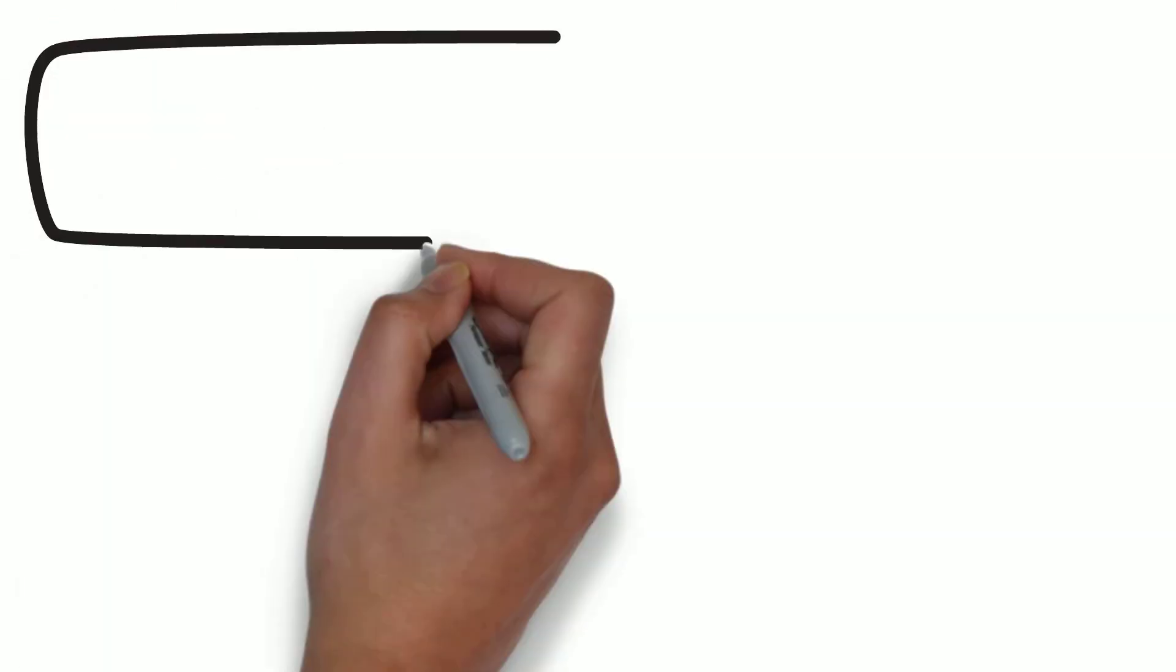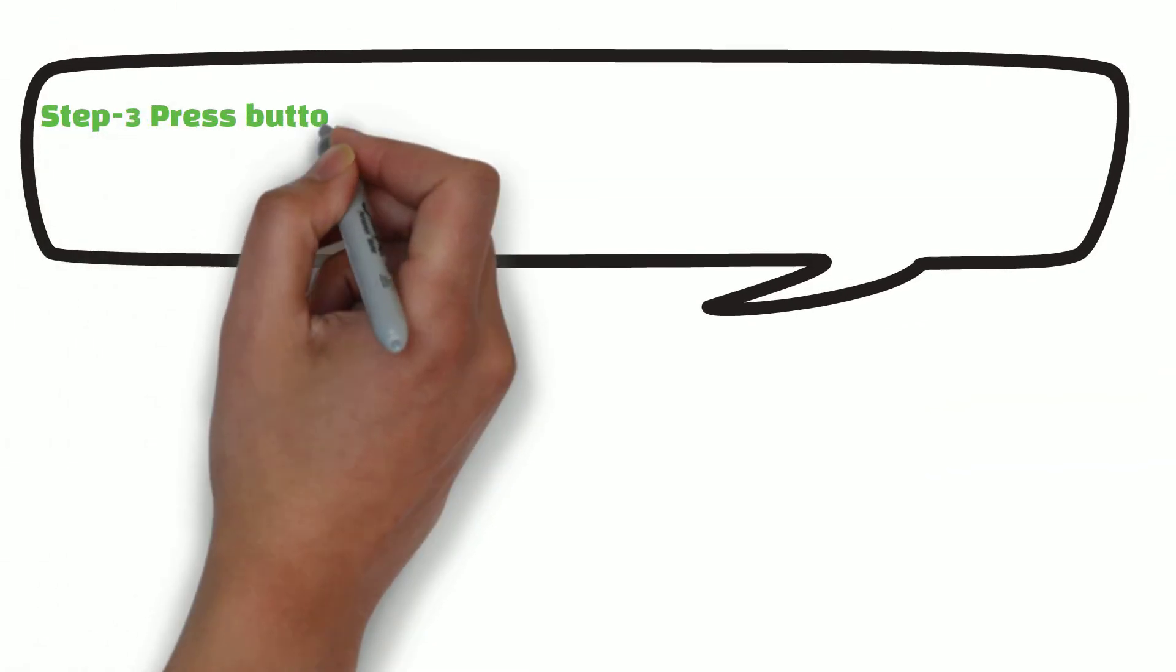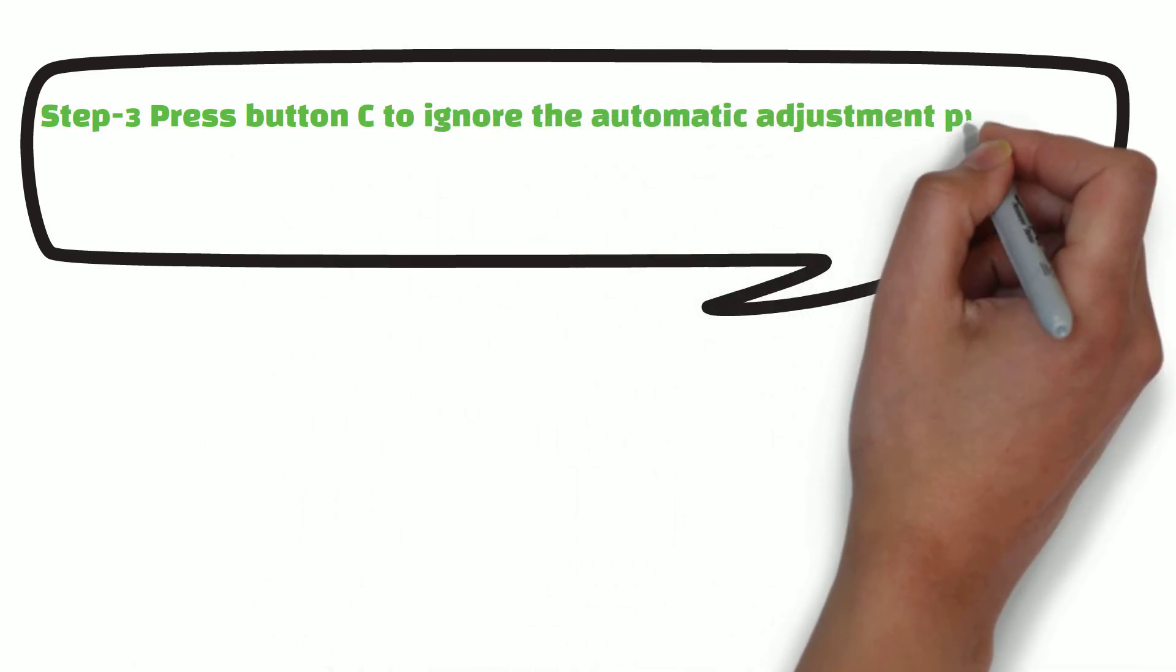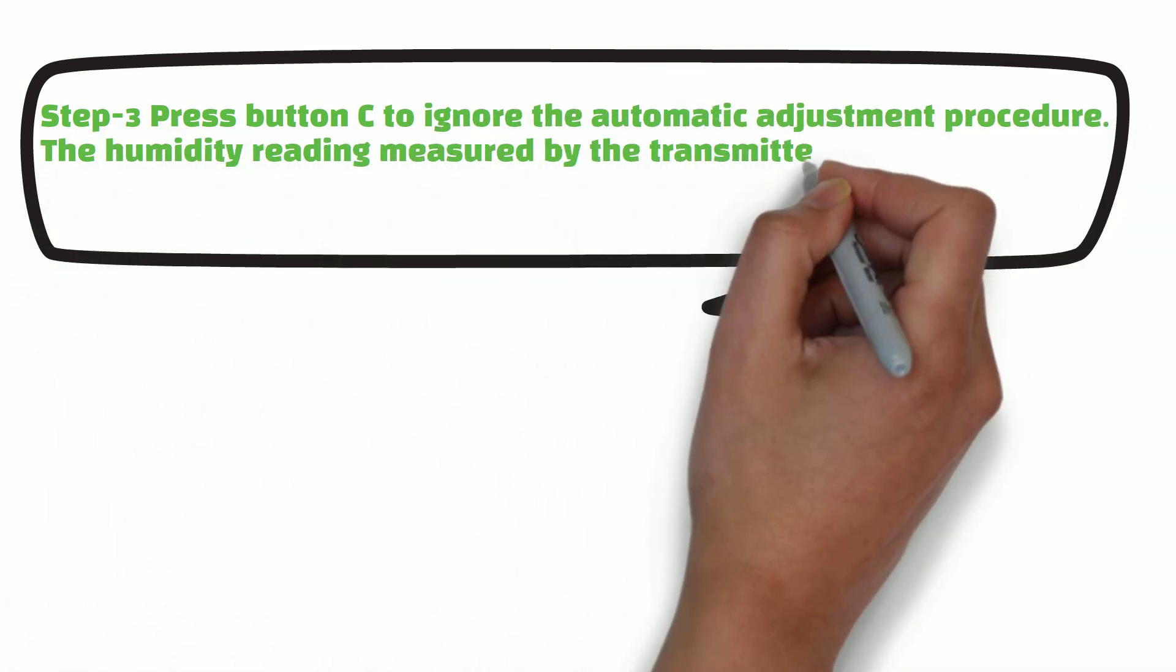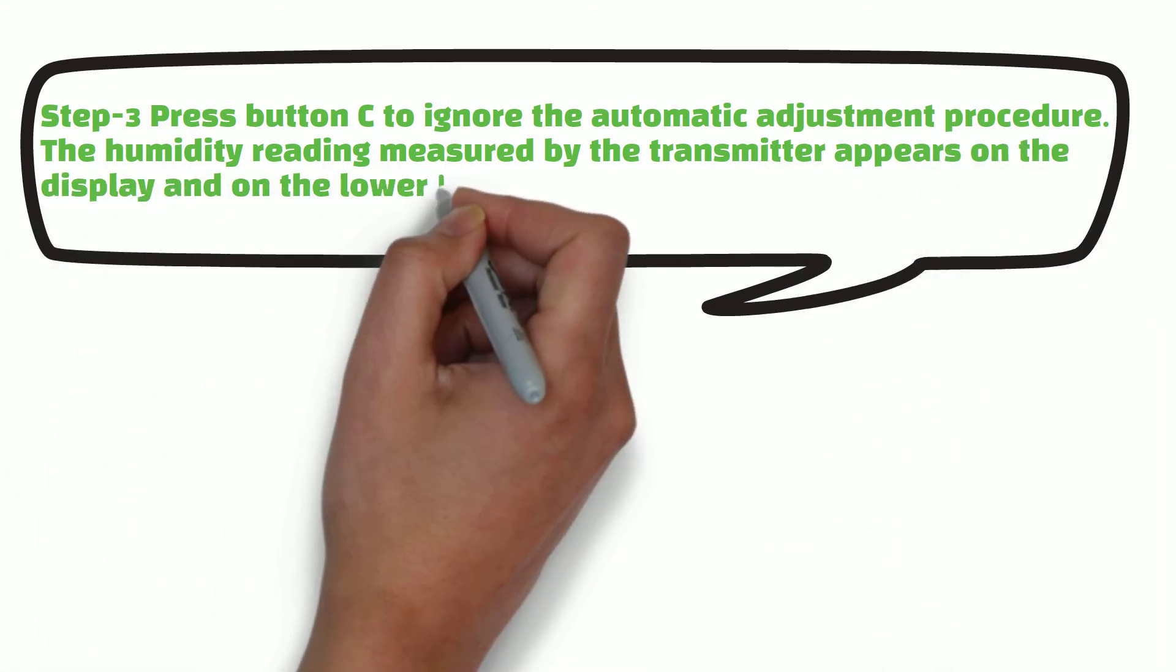Now, press button C to ignore the automatic adjustment procedure. The humidity reading measured by the transmitter appears on the display, and you can see the text set low on the lower left-hand corner side of the display.